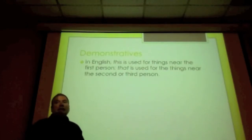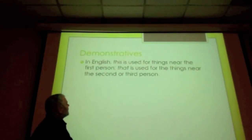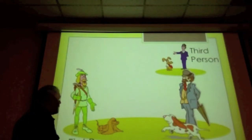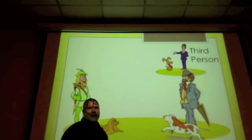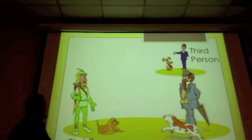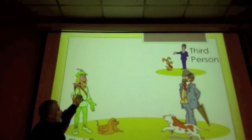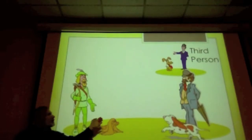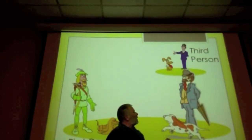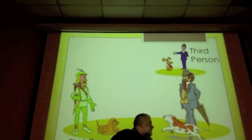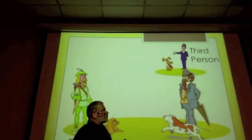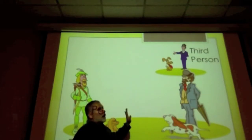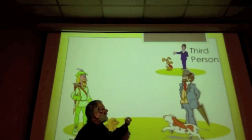In English, 'this' is used for things near the first person, and 'that' is used for things near the second or third person. To explain: here we have Robin Hood, a British man with an umbrella, and a Bobby. Robin Hood is speaking, so from his perspective he is the first person. He's speaking to the man with the umbrella, so that man is the second person. The Bobby off in the distance is neither first nor second person — he's third person: he, she, it, or they.